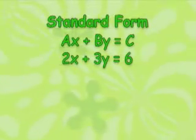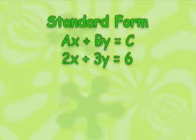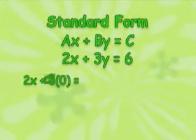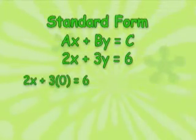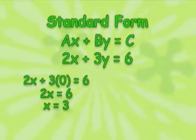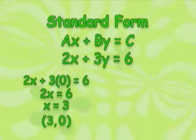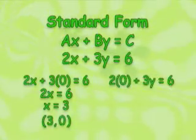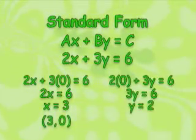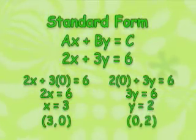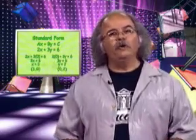It's also a convenient form for finding X and Y intercepts. Substitute zero in for Y and solve for X — that's the X intercept. Replace the X with zero and solve for Y — that's the Y intercept. That's the standard form of an equation, but it's not the only form.